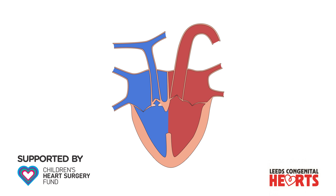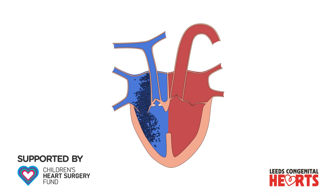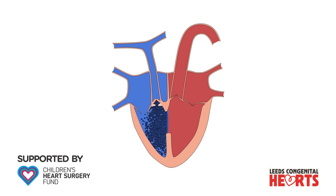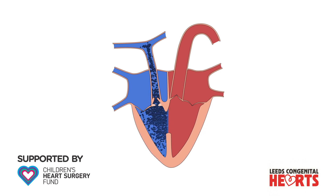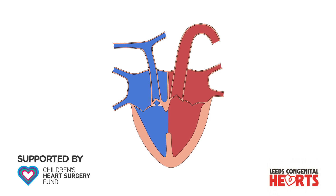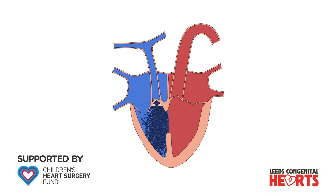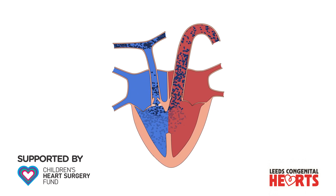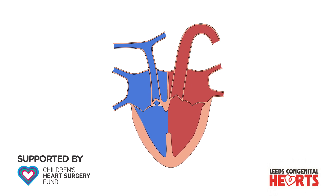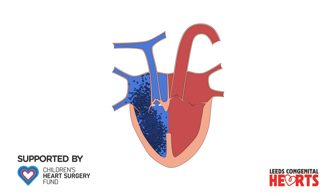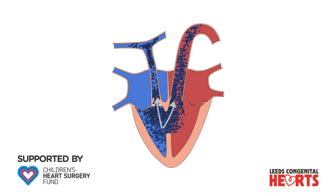The abnormalities in Tetralogy of Fallot affect the way blood flows through the heart. Blood that is low in oxygen enters the right atrium from the veins, and then moves to the right ventricle as normal. However, the obstruction to blood entering the pulmonary arteries means that some blood is forced through the ventricular septal defect into the aorta. This means that some blood that has low levels of oxygen is pumped to the body rather than to the lungs.